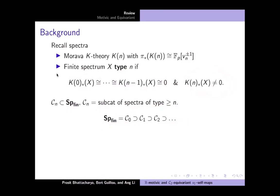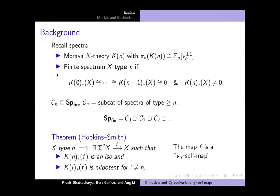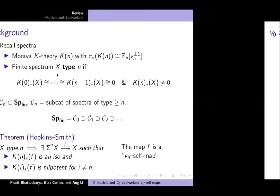Hopkins and Smith showed these are all the thick subcategories of the category of P-local finite spectra. Another important theorem of Hopkins and Smith is that if you have a type-N spectrum, it admits what's known as a V_N self-map. That means on the Nth Morava K-theory — the first non-trivial one — the map is an isomorphism, and on the other Morava K-theories it's nilpotent. The lower ones are already zero, and the higher ones being nilpotent is a powerful condition.